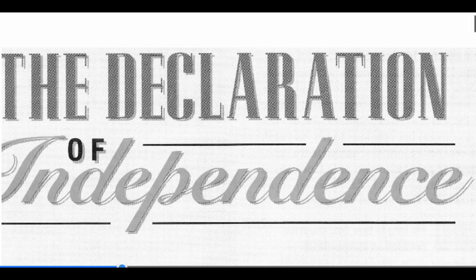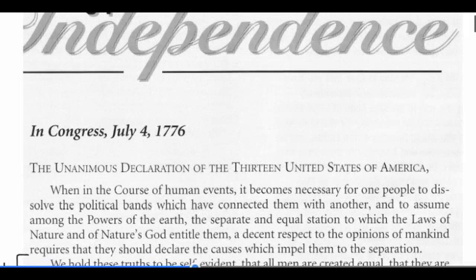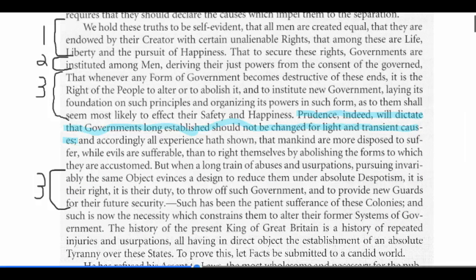The Second Continental Congress is meeting. The Battles of Lexington and Concord had taken place, necessitating the Second Continental Congress in Philadelphia. The delegates there decided to declare independence and tasked Thomas Jefferson with writing it. Looking at item number one: 'We hold these truths to be self-evident, that all men are created equal.' The unalienable rights are life, liberty, and the pursuit of happiness.